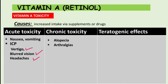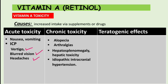Regarding chronic toxicity, features include alopecia — hair loss — arthralgia, which is joint pain, enlargement of the liver, and hepatic toxicity.